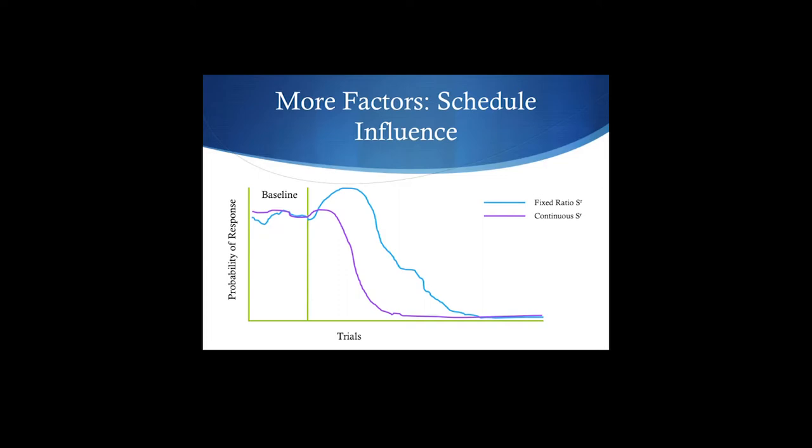Now let's watch what happens with another type of intermittent schedule, the variable interval. Look at that extinction burst - that orange line now. So that extinction burst is way up there, it's really high, took a while to get it up there, and look at how long it takes for that behavior to go away.